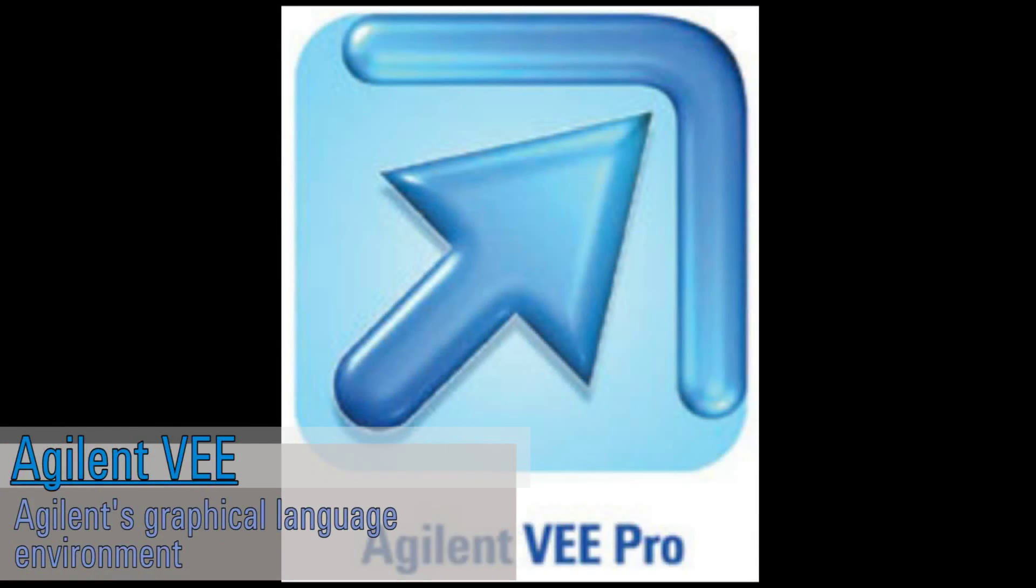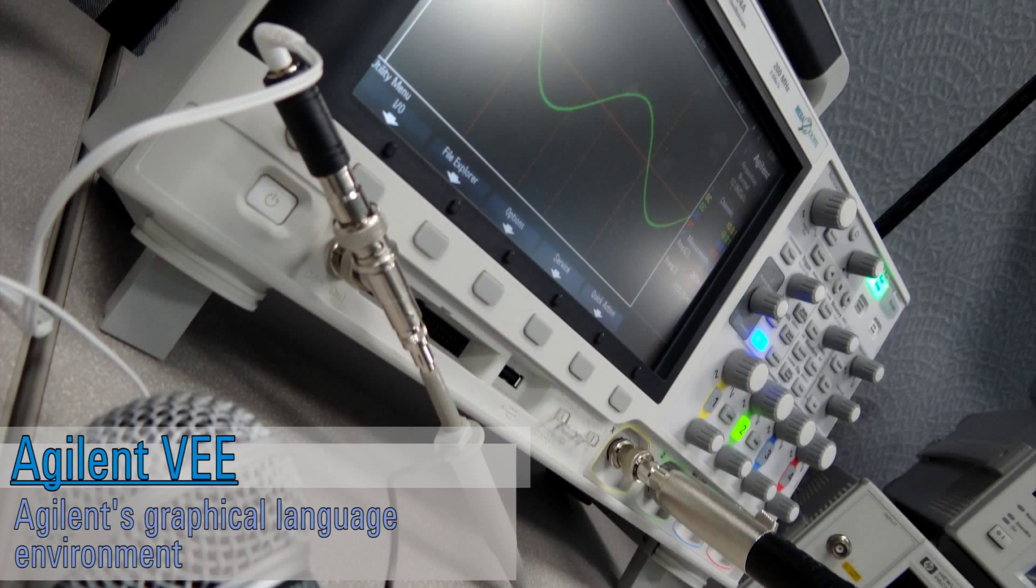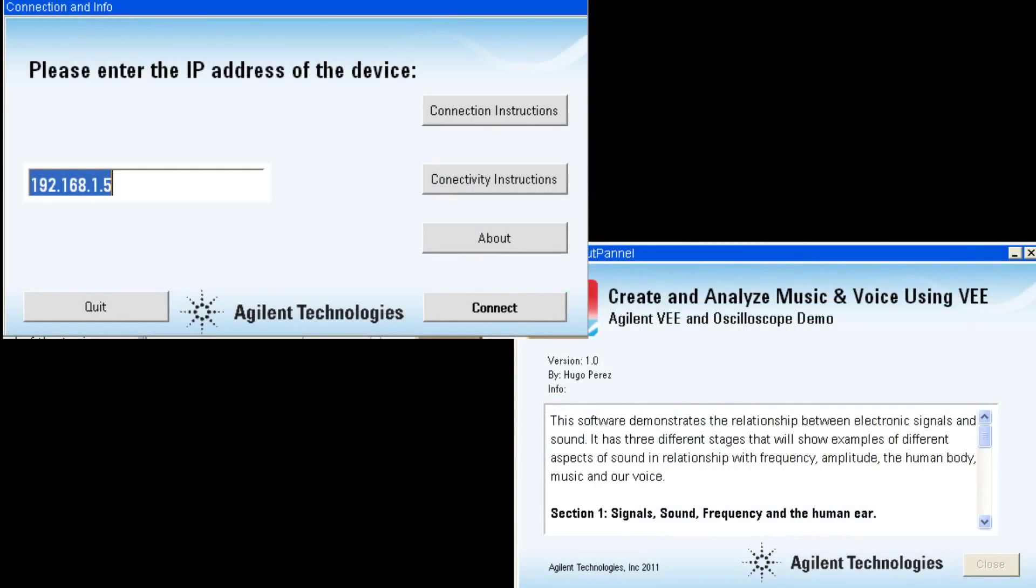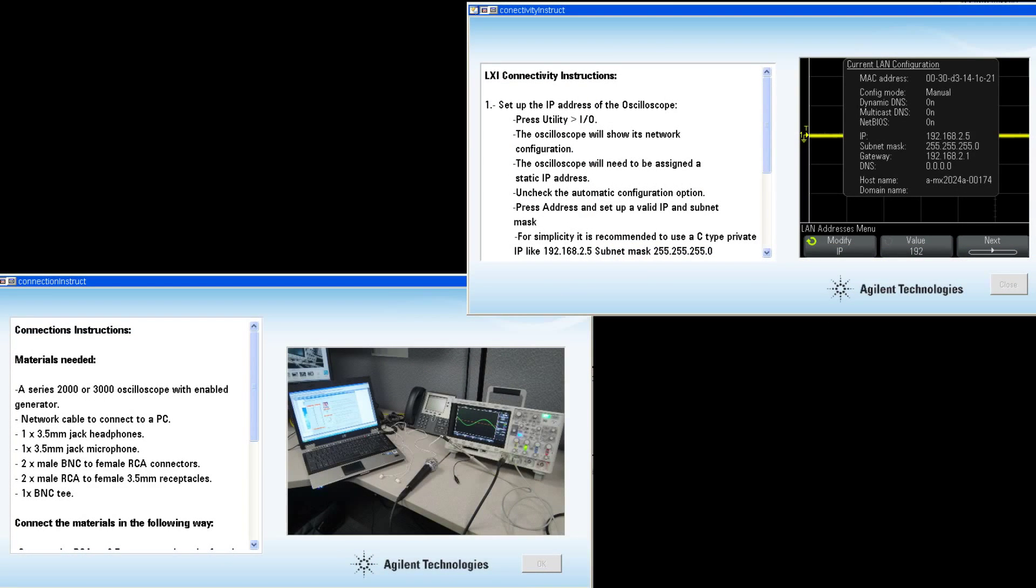AgileMV takes advantage of this communication standard in order to control and program the oscilloscope. VEE is a powerful, easy to use and fast to program graphical programming language environment. It helps not only to accelerate electronic test and measurement development, but it's also flexible enough for general-purpose programming.